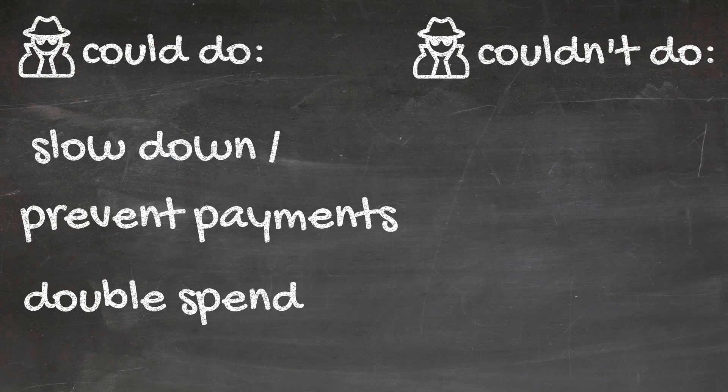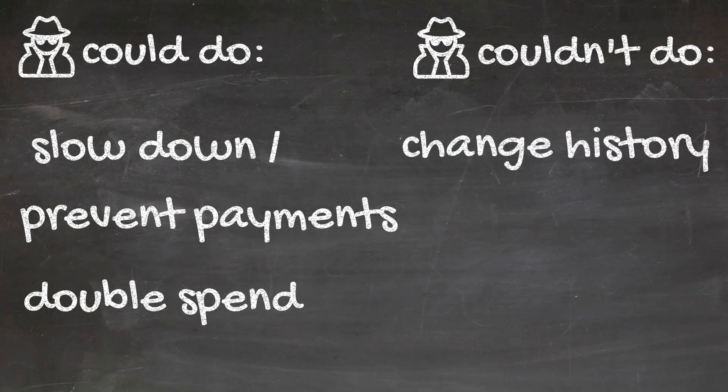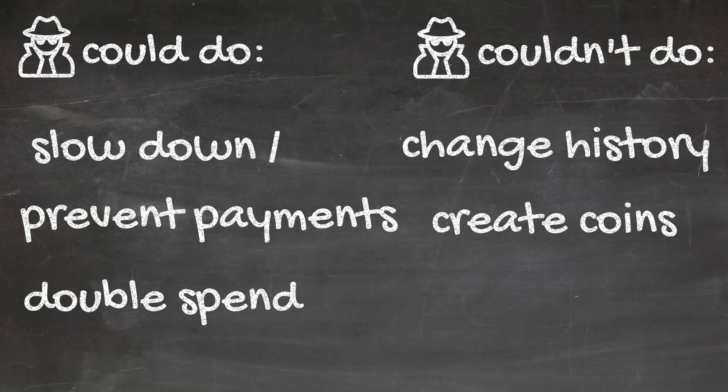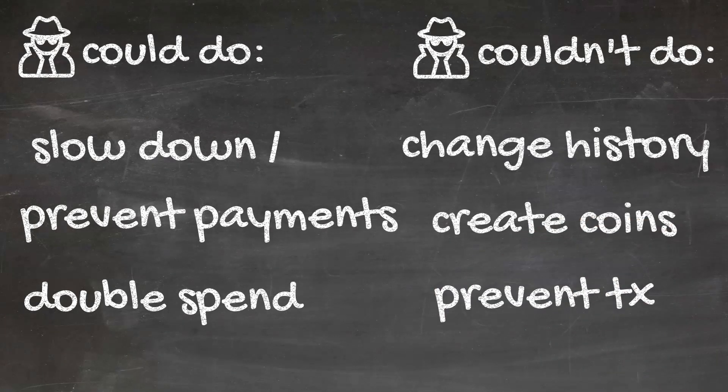However, they couldn't change transactions that occurred in the distant past. Apart from double-spending, they also couldn't create coins out of thin air that never belonged to them. It would also be impossible for them to prevent transactions from being created.